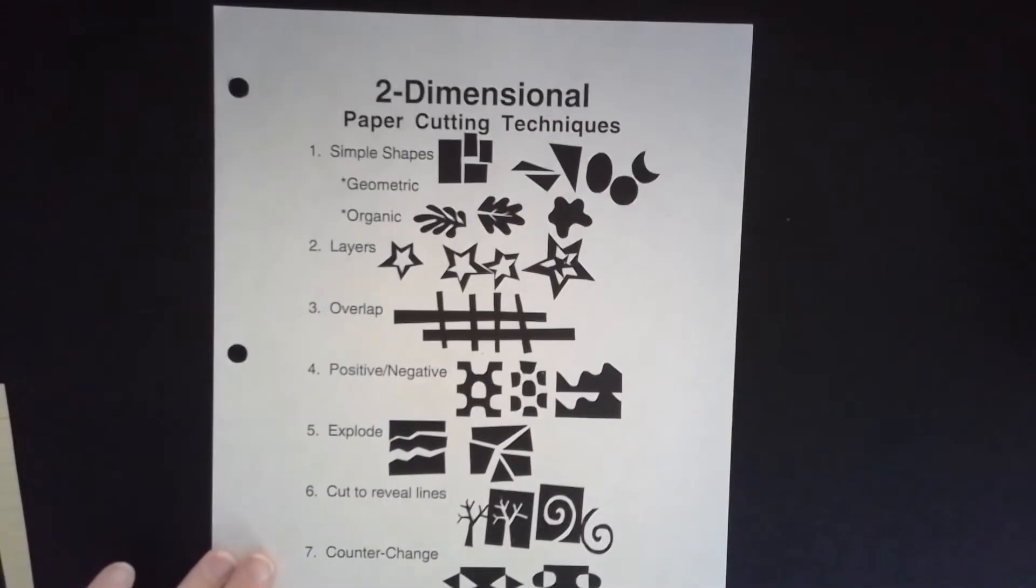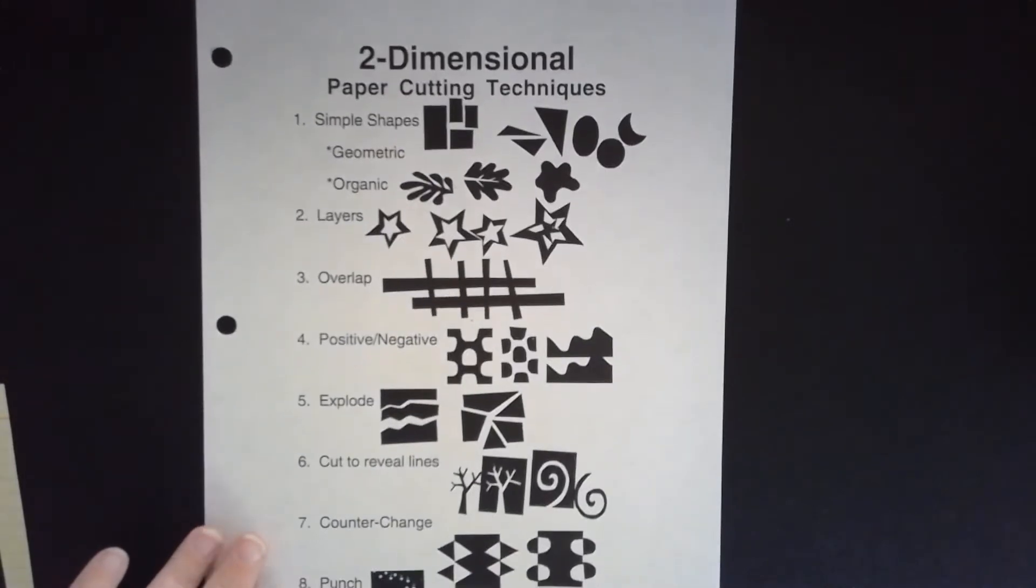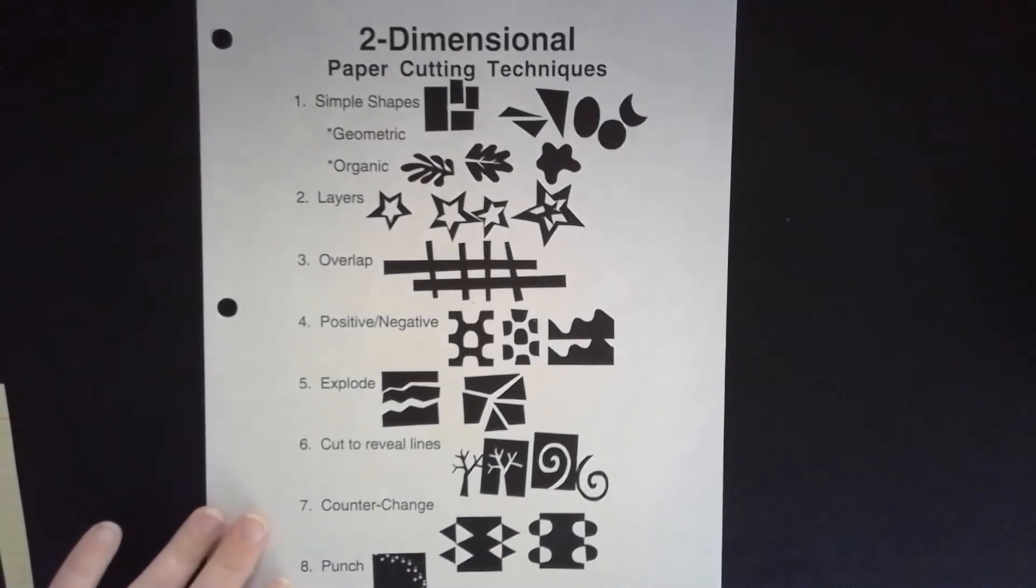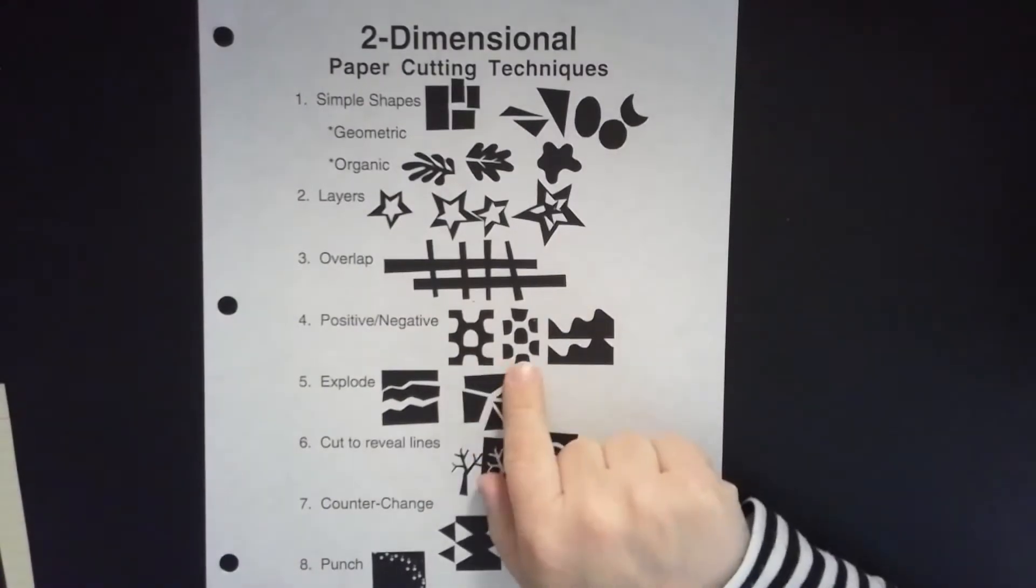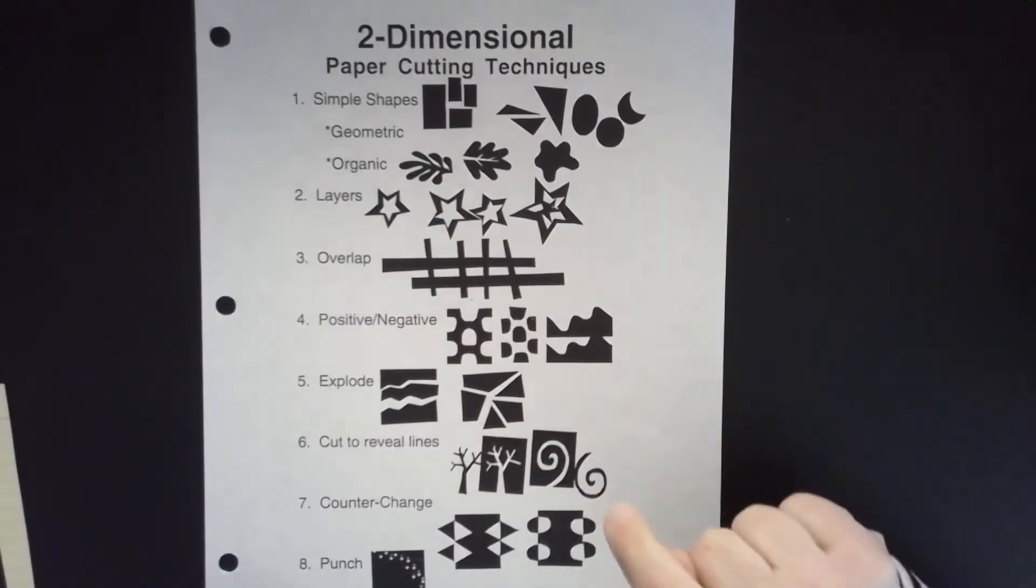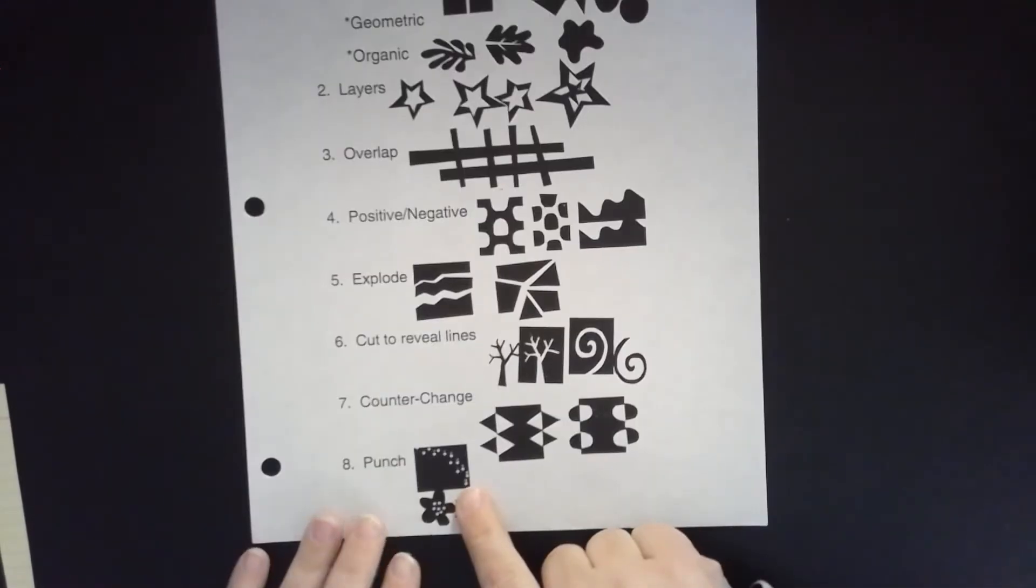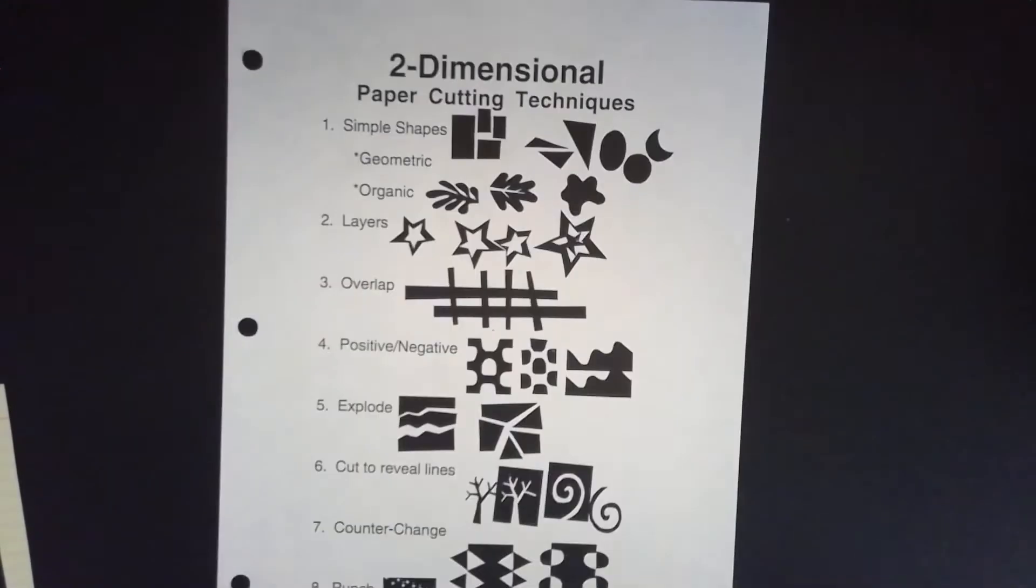Here is our two-dimensional paper cutting techniques handout, and this is the kind of stuff that you're going to want to add. If you were in class, we would say that you should be trying to get three of these. I think the three that I'm going to focus on here is the positive and negative space, which I'll talk about in just a minute, exploding, hole punching, and I might try and get a couple more on here.